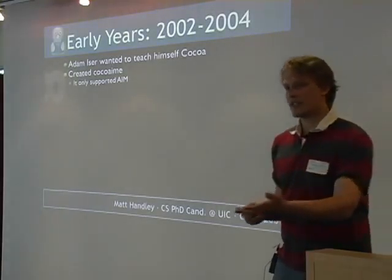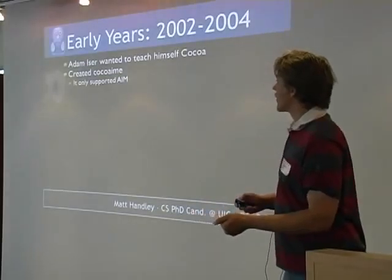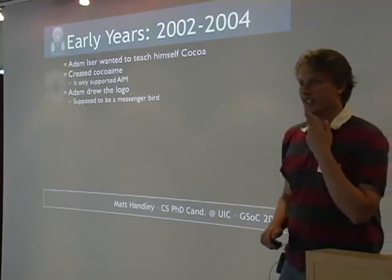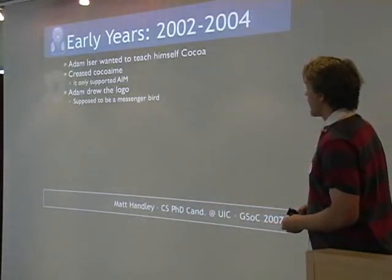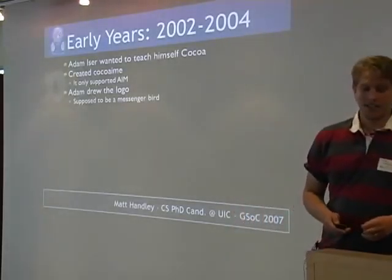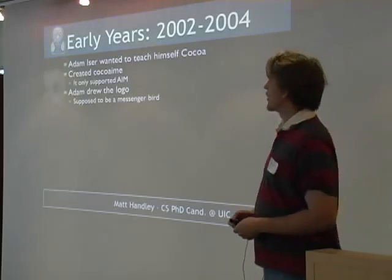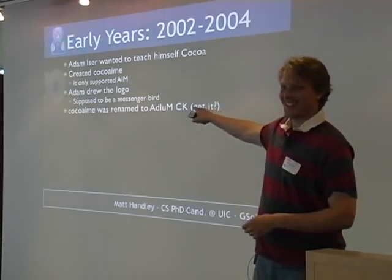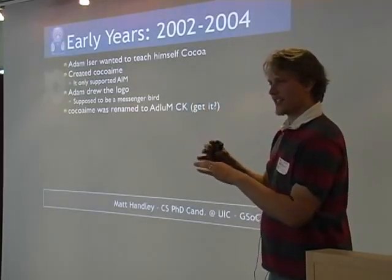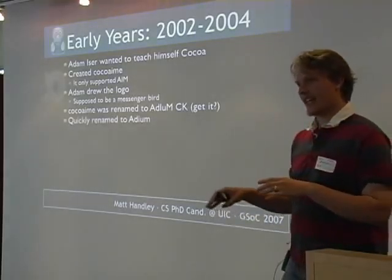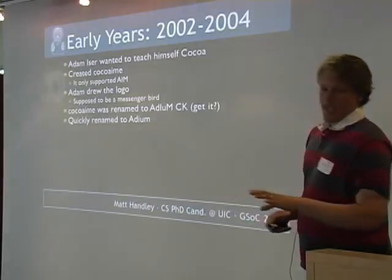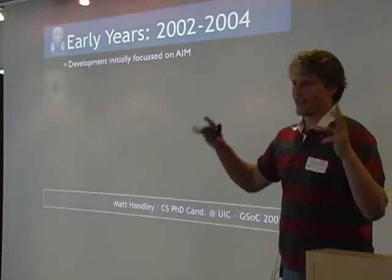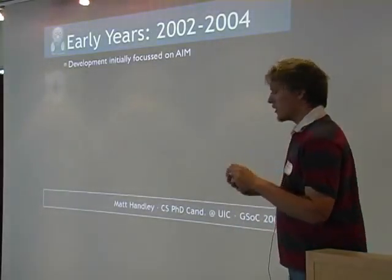One of the things you need when developing software is a logo. He drew a messenger bird — but many people didn't see a messenger bird; instead they saw a duck. So Cocoa AIM was renamed to A-D-I-U-M-C-K — you see, it's like a duck in AIM. A lot of people also didn't get it, so they dropped the CK and called it ADIUM. In the beginning, development was just an AIM client — not the multi-protocol customizable beast it is now. They really focused on doing AIM well.